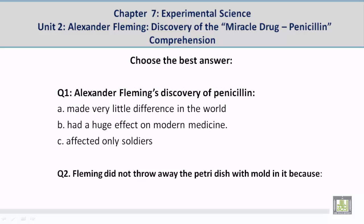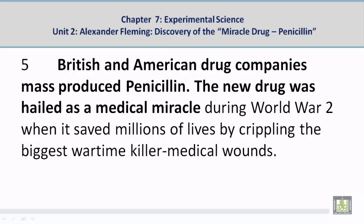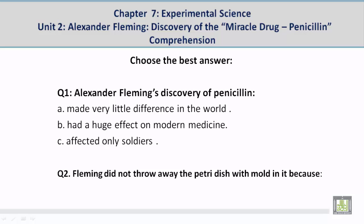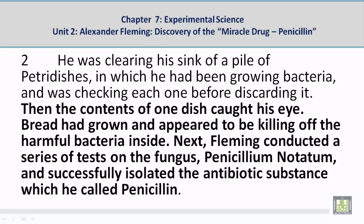Choose the best answer. Question 1: Alexander Fleming's discovery of penicillin — B — had a huge effect on modern medicine. Supporting paragraph: British and American drug companies mass-produced penicillin; the new drug was hailed as a medical miracle during World War II when it saved millions of lives by crippling the biggest wartime killer, infected medical wounds. Question 2: Fleming did not throw away the petri dish with mold in it because he discovered a life-saving antibiotic later named penicillin. Supporting paragraph: The contents of one dish caught his eye — mold had grown and appeared to be killing off the harmful bacteria inside. Fleming conducted a series of tests on the fungus Penicillium notatum and successfully isolated the antibiotic substance, which he called penicillin.